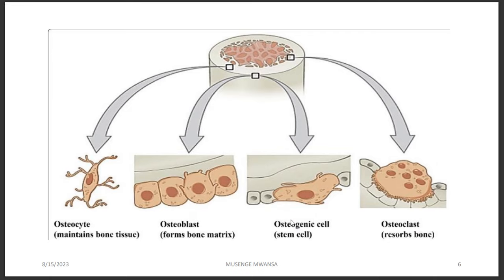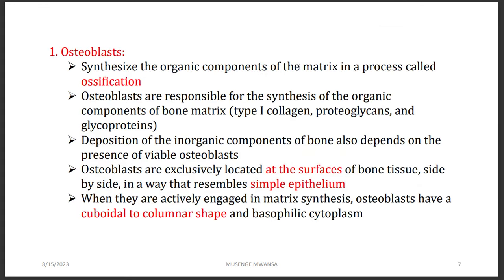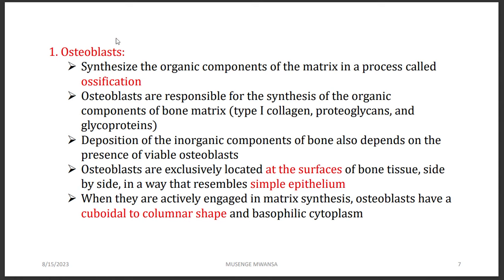It is important to note where bone cells are located. The outermost part of bone is the periosteum, divided into an inner and outer layer. It is in the inner layer of the periosteum where we find osteogenic cells and osteoblasts. Osteoclasts are found further inside. Osteoblasts are the ones which synthesize the organic component in a process called ossification — which is the hardening of the matrix to form strong bone.